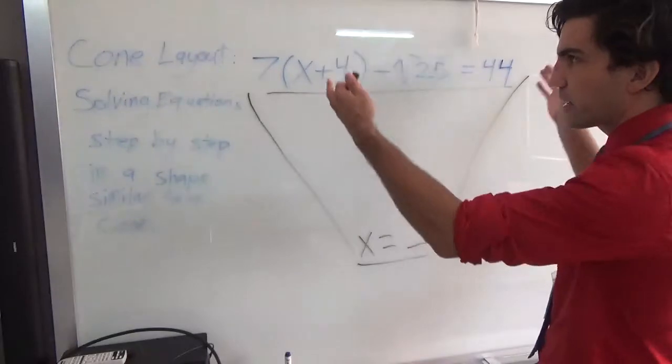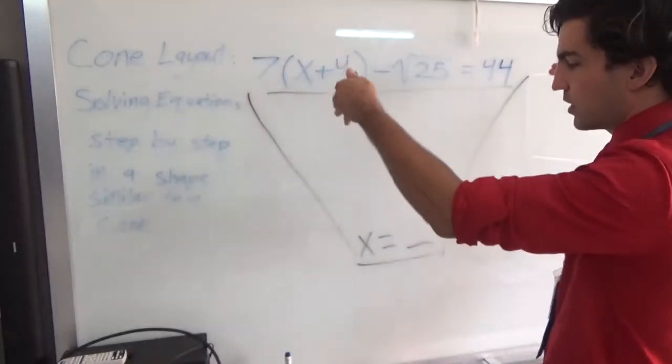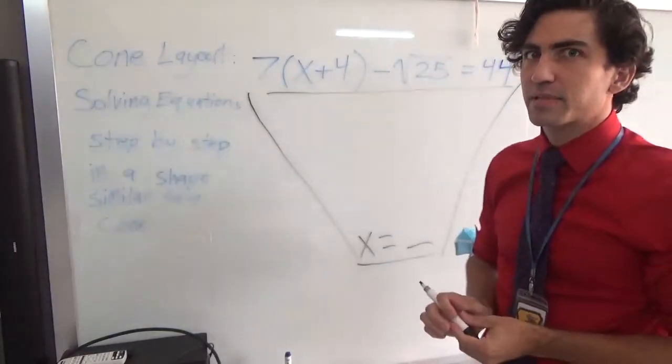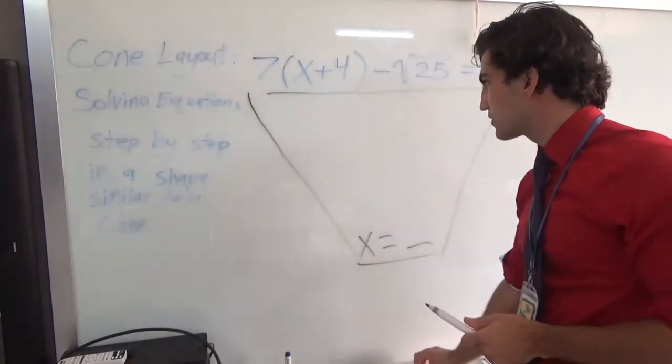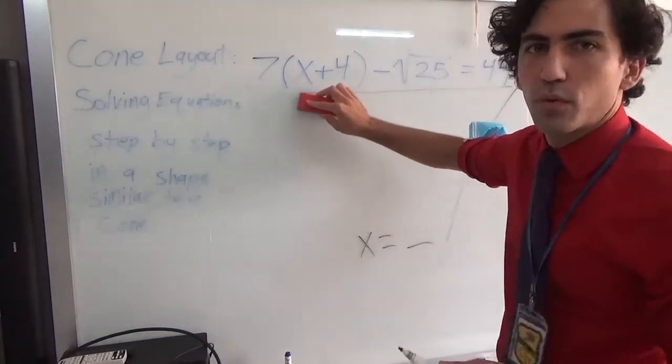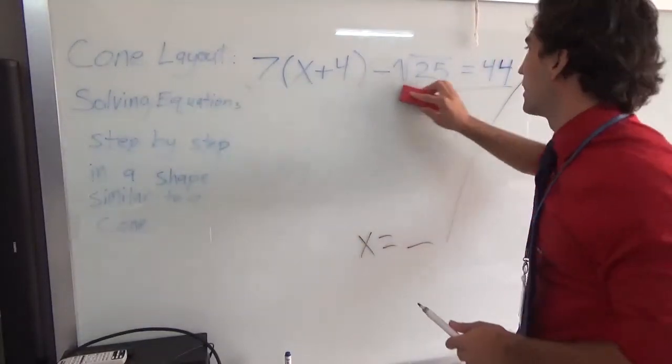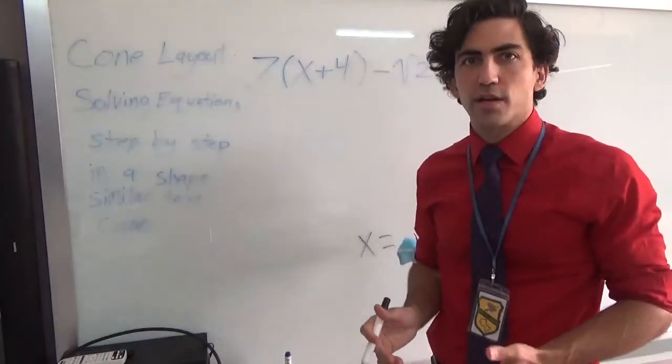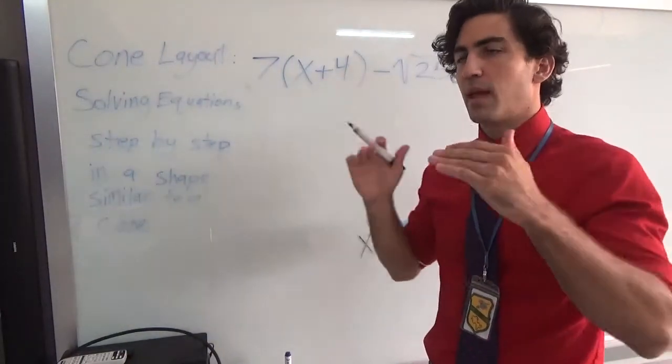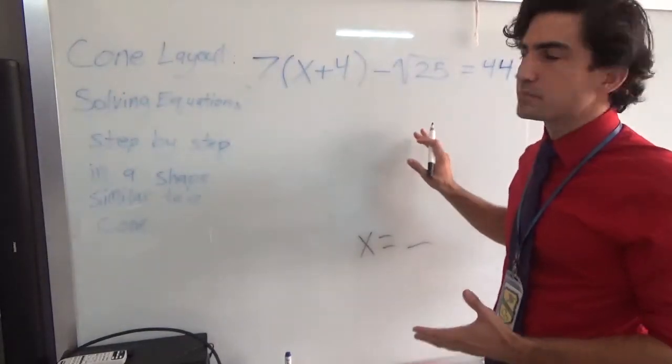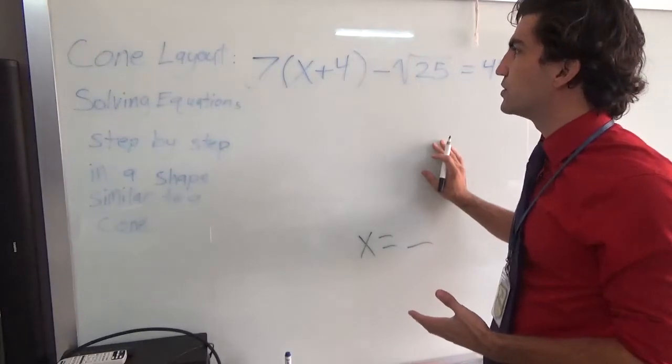That's why we call it the cone method because it really, hopefully, is in that sort of a shape of like an upside down pyramid. So that's why we call it the cone layout. You can call it the cone format or whatever. It's just a way to solve equations one step at a time and you see each step. If I look at this equation, there are two things that I want to do right at the start.